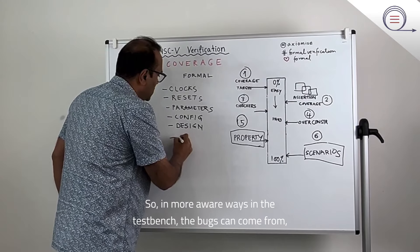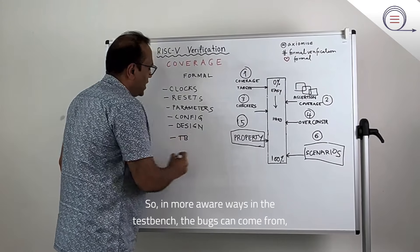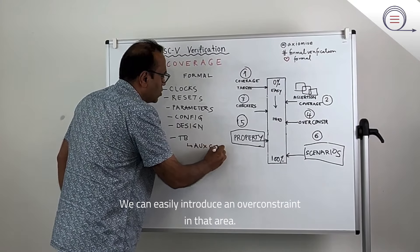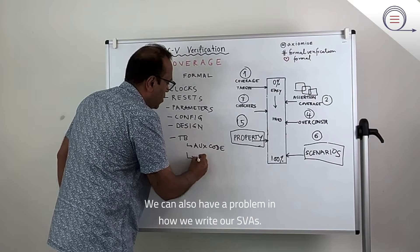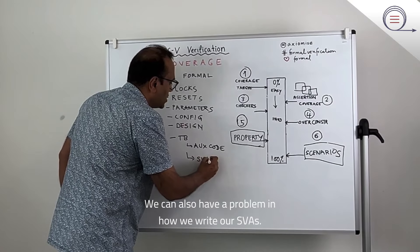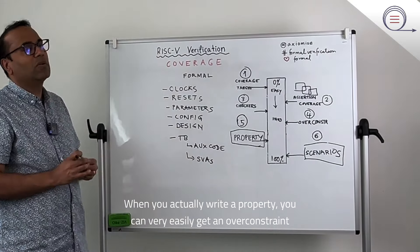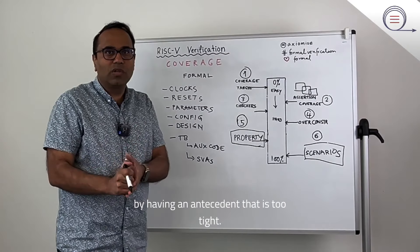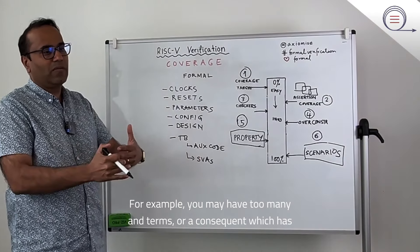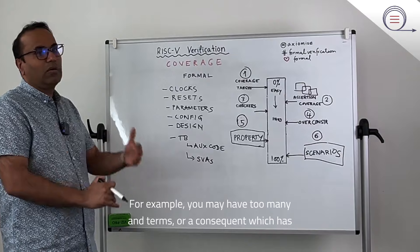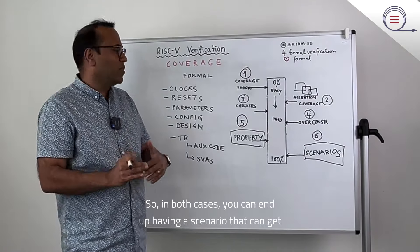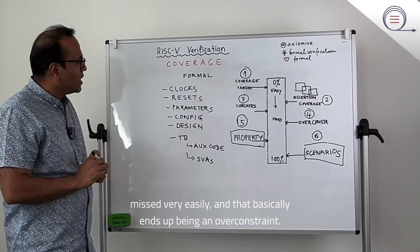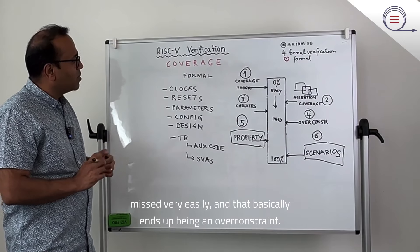In more overt ways in the testbench, bugs can come from the auxiliary code we write — we can easily introduce an over-constraint there. We can also have a problem in how we write our SVAs. When you write a property, you can very easily get an over-constraint by having an antecedent that is too tight — for example, too many AND terms — or a consequent with too many OR terms. In both cases, you can end up missing a scenario, which ends up being an over-constraint.